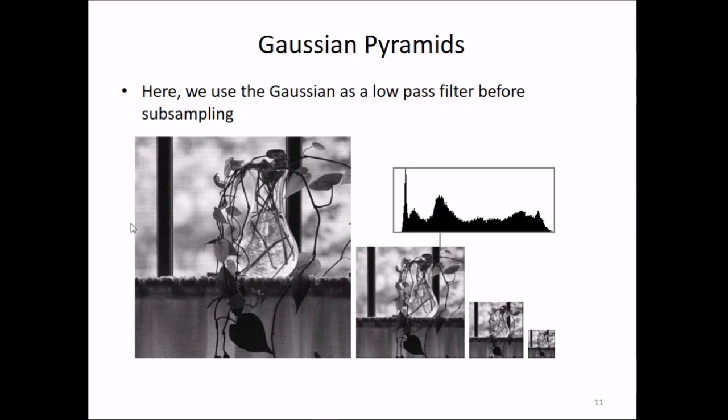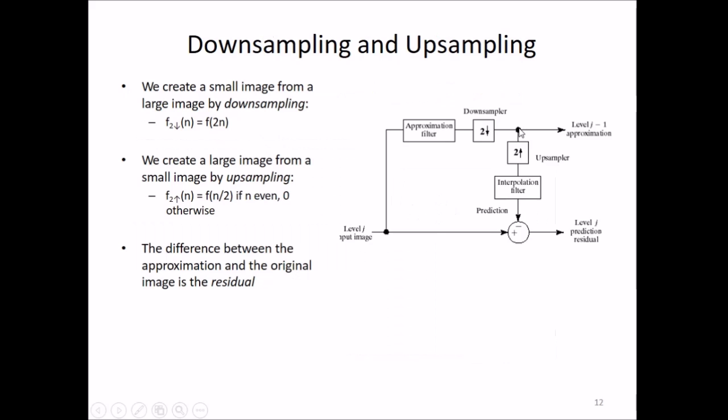For example, this is an image subsampled to n by n, n/2 by n/2, n/4 by n/4, and so on. Here we use a Gaussian as a low pass filter before subsampling. This is done because there's a limit to frequency beyond which subsampling cannot be done, so we reduce the frequency using this Gaussian low pass filter. Down sampling creates a small image from a large image, and up sampling creates a large image from a small image.